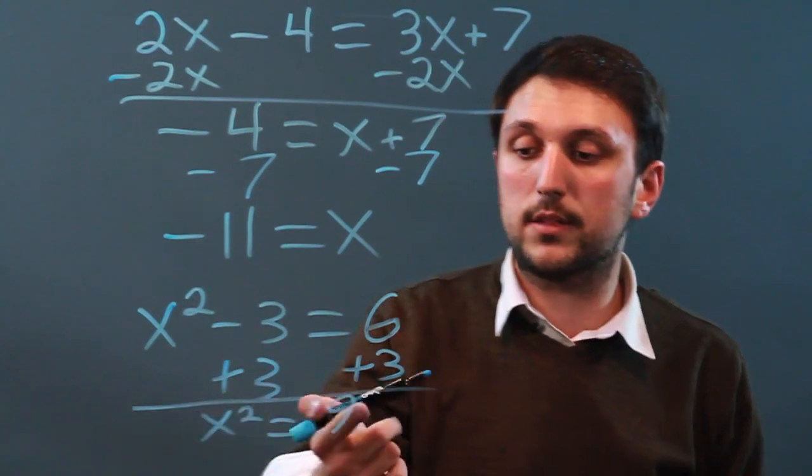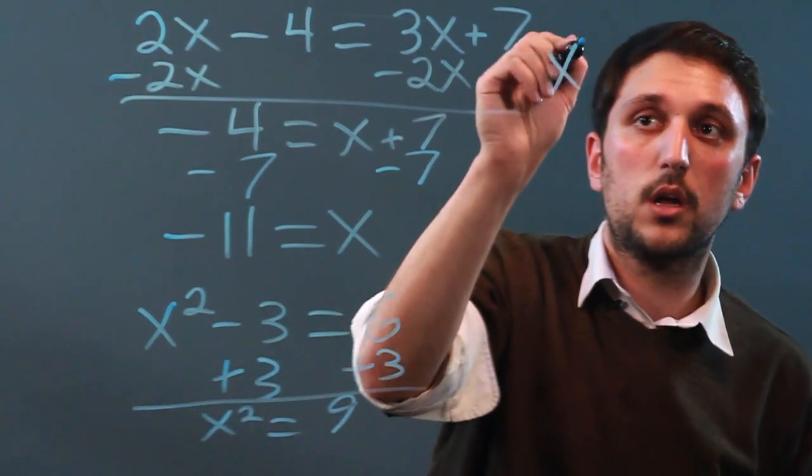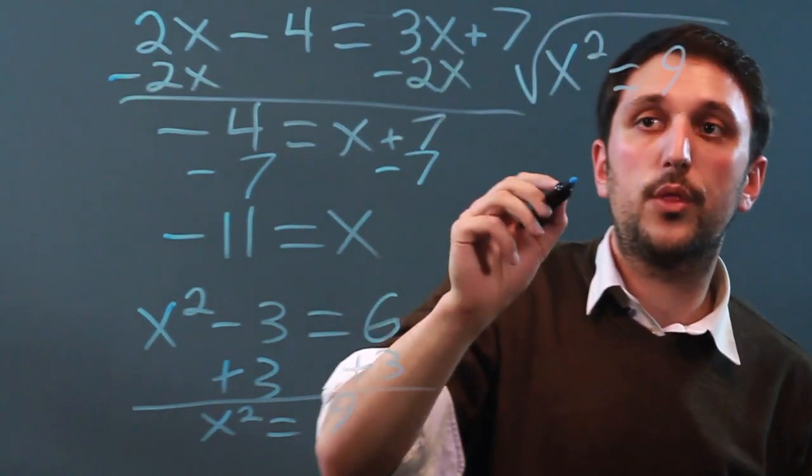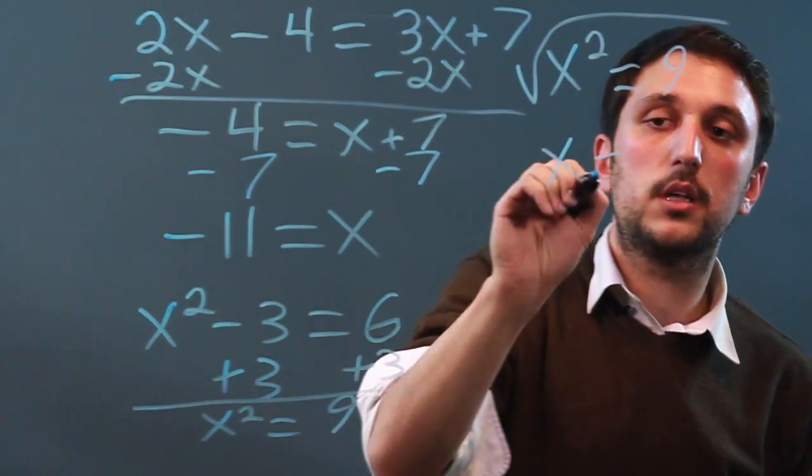Now the next step is to take the square root. I'm going to rewrite it over here. x squared equals 9. And we take the square root of the whole thing. So we get x equals 3.